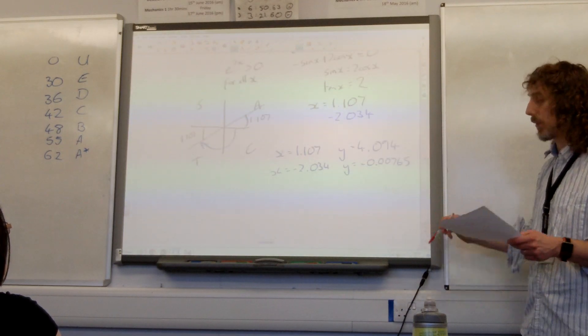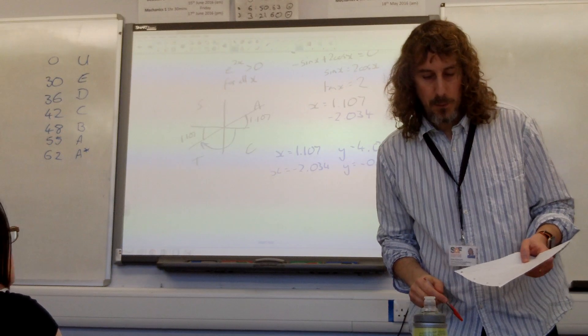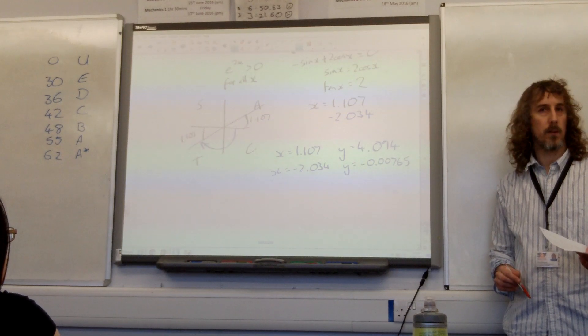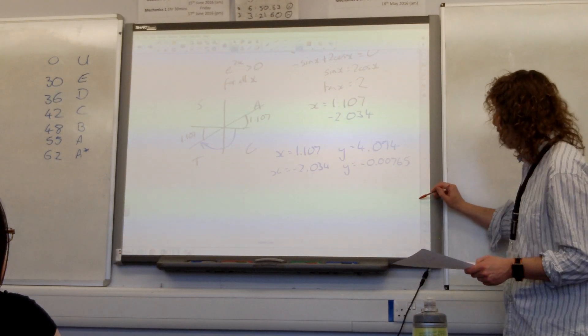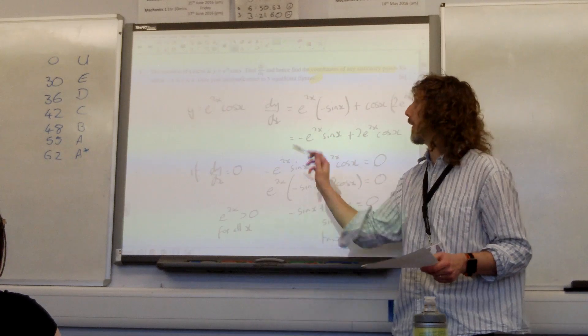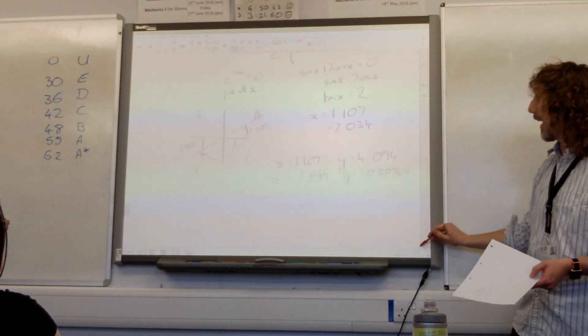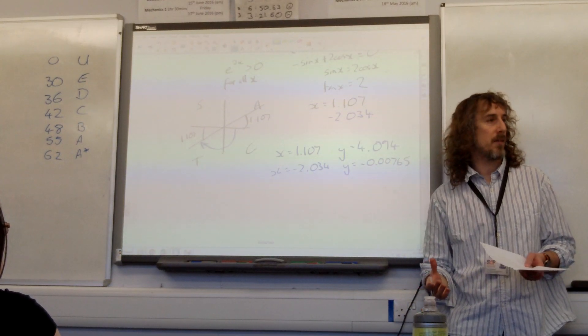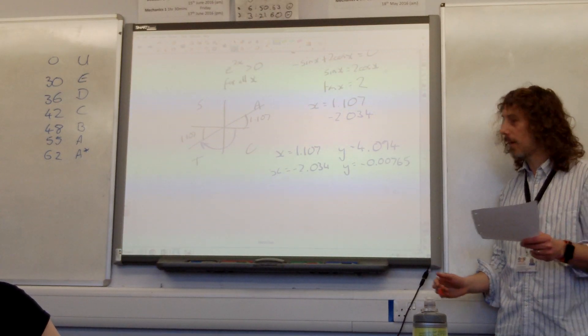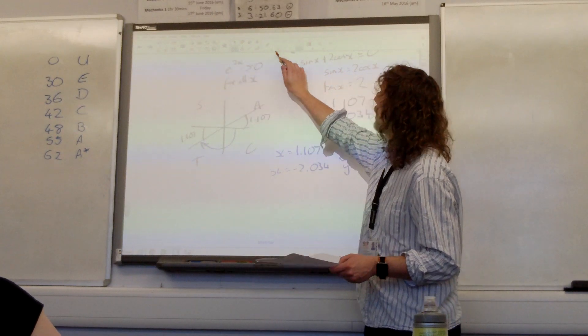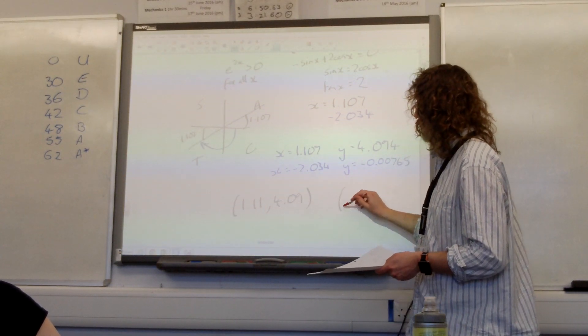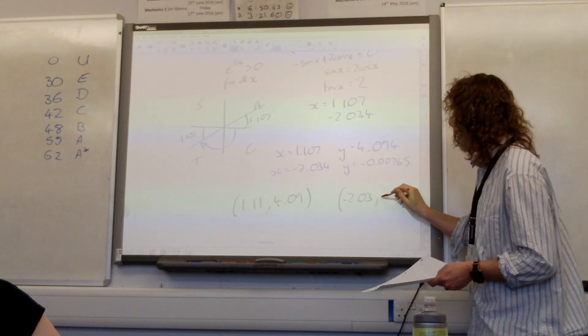So at this point, Dave has got 5 out of 6. Why have I got 5 out of 6? I've got to make sure you're reading questions carefully and it does clearly say that we should be to 3 significant figures. So this isn't one of those cases where you can get away with putting more accuracy down. So you have to stick to that. So my final answer is going to be putting these as two coordinates: (1.11, 4.09) and the other coordinates (-2.03, -0.00765).